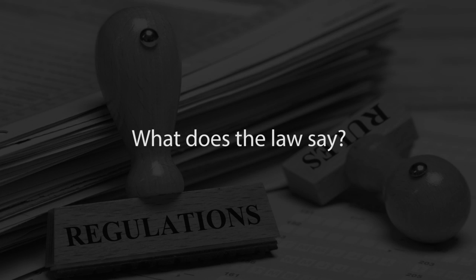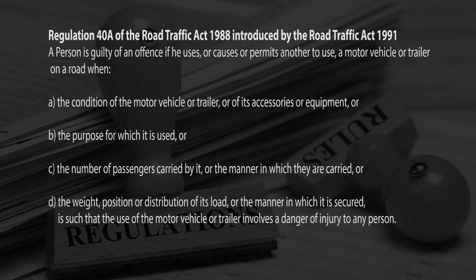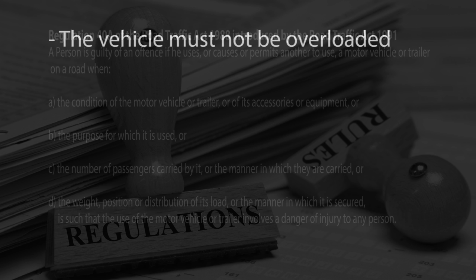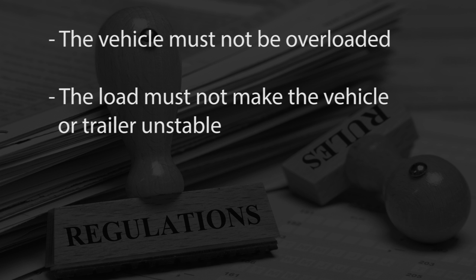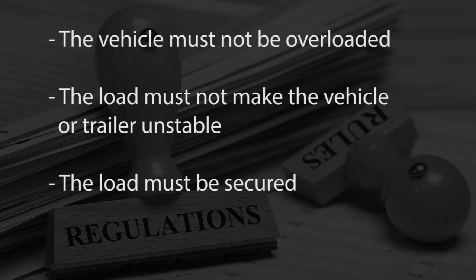What does the law say? The Road Traffic Act, Section 40A, says that the driver or anyone else who causes or permits a vehicle to be on the road when the weight, position or distribution of its load, or the way in which the load is secured, means there is a danger to any person, is committing an offence and could be prosecuted for dangerous driving. This means that the vehicle must not be overloaded, the load must not make the vehicle or trailer unstable, and it must be secured to protect the driver and other road users.